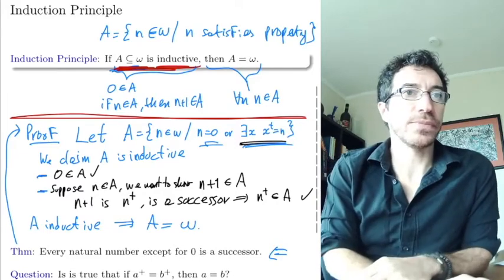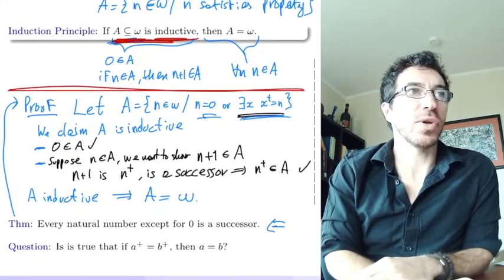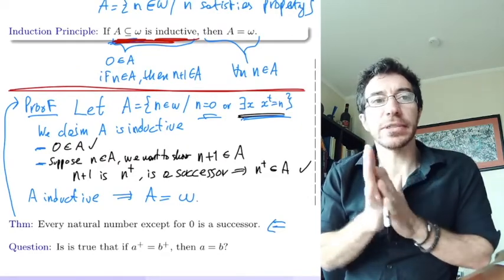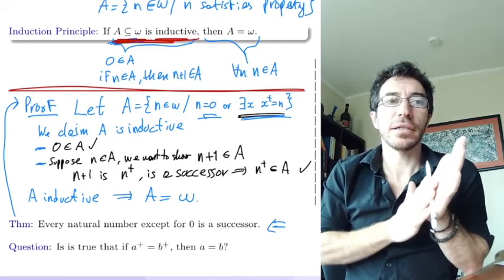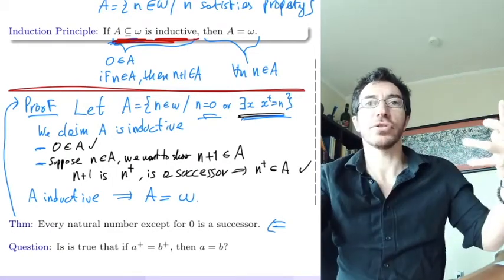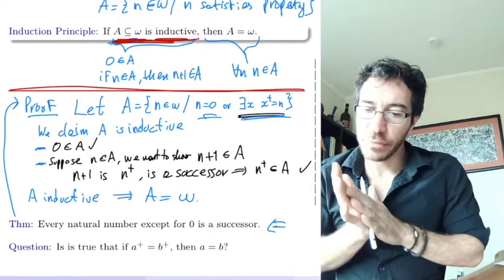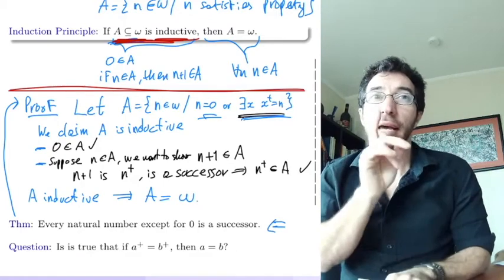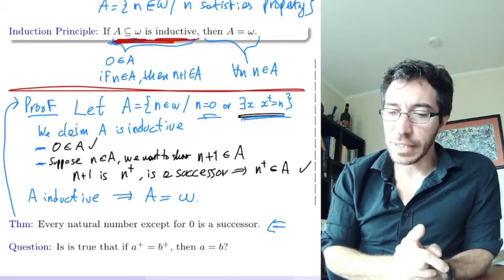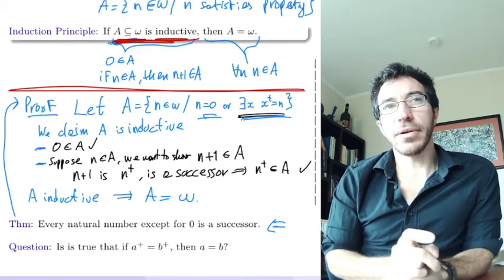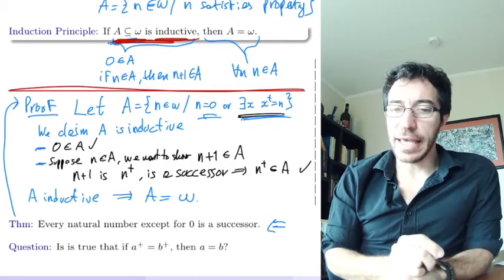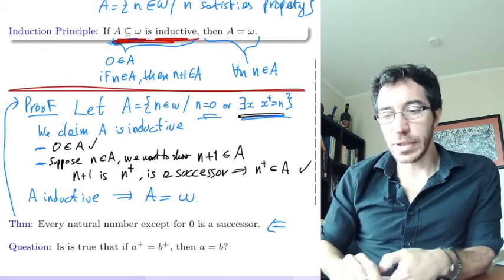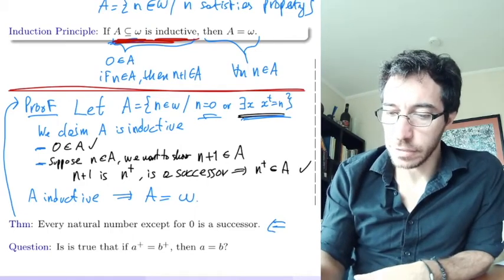Here is an important question, which is going to motivate our next video. Is it true that whenever a-plus equals b-plus, then a equals b? So is the successor function one-to-one? Can different things go to the same thing? Notice we haven't proved this. And if it's not one-to-one, then when I say that inductive sets need to be infinite, I was kind of assuming this.